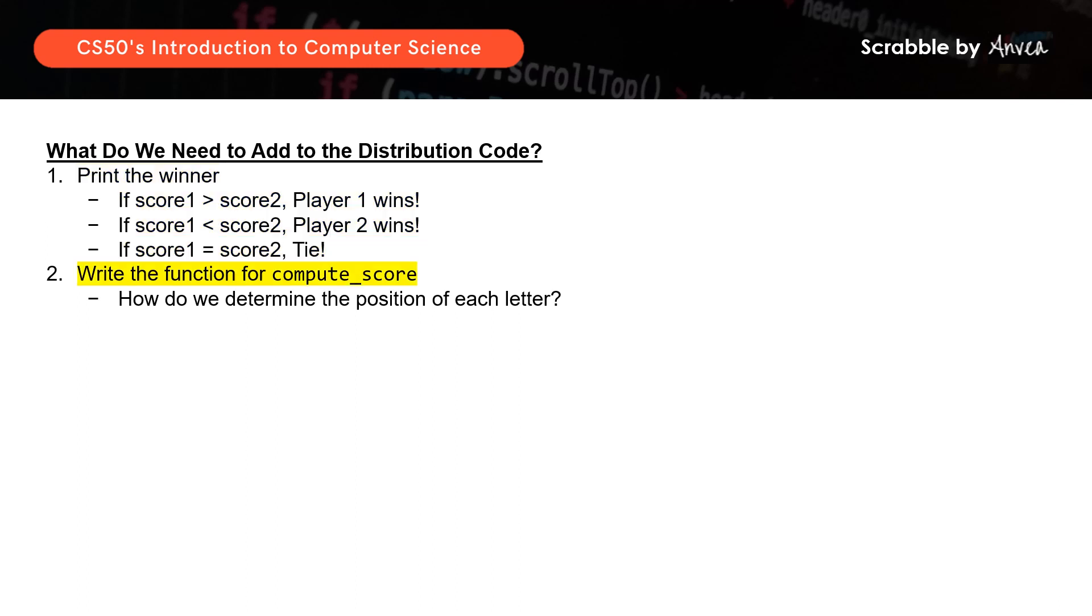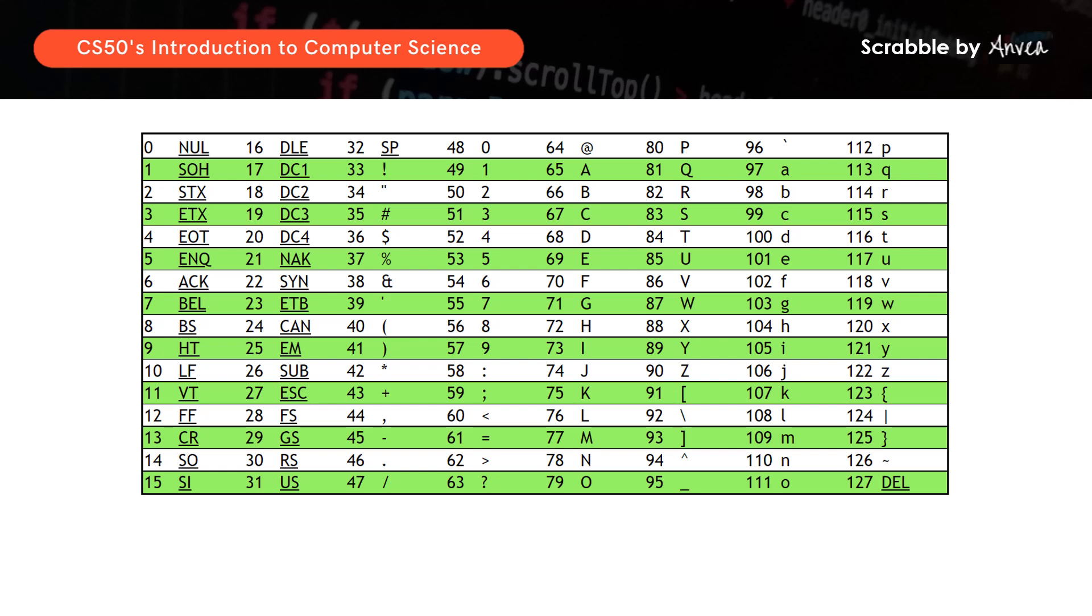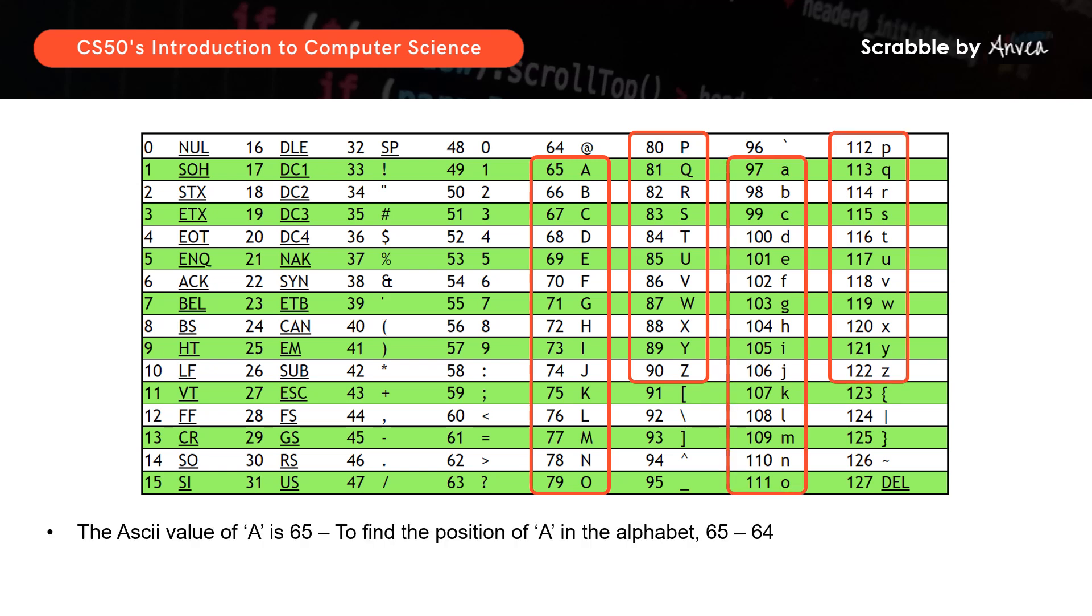Next, we will write the function for compute score. For starters, how do we determine the position of each letter in the alphabet? So this will be done using the ASCII chart, where you can see that we have a value packed to each alphabet, with different values for uppercase and lowercase letters. So A is the first letter of the alphabet. So if the ASCII value of the uppercase A is 65, then to find the position of uppercase A in the alphabet, we take 65 minus 64 equals to 1, right?